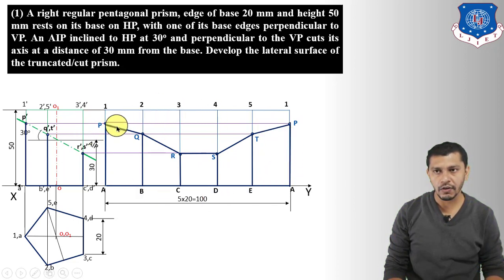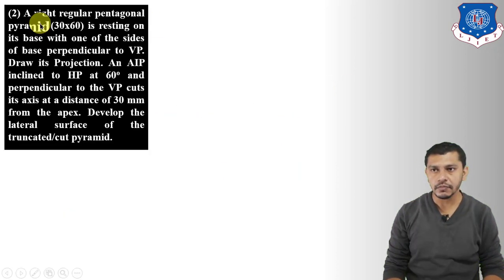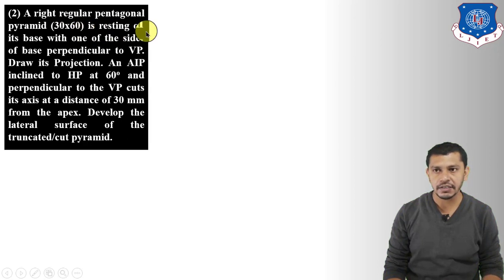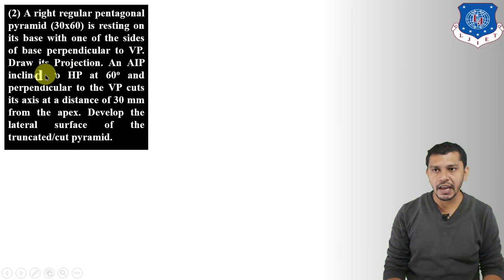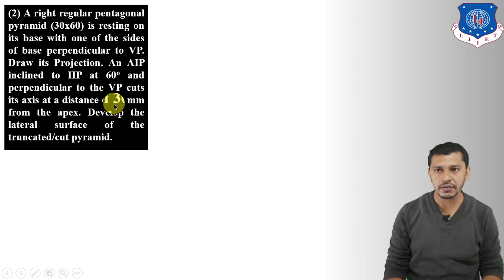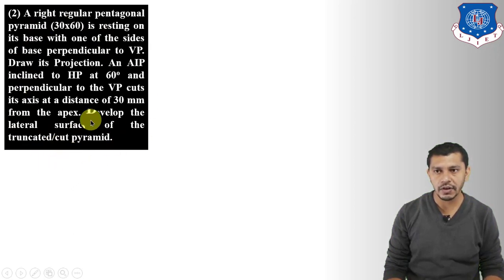Draw the dark outlines of the lower part of the development to complete the development of the truncated pentagonal prism. Now the second problem: a right regular pentagonal pyramid with base 30 mm and axis height 60 mm rests on its base with one side of the base perpendicular to VP. An AIP inclined to HP at 60° and perpendicular to VP cuts the axis at 30 mm from the apex. Develop the lateral surface of the truncated cut pyramid.